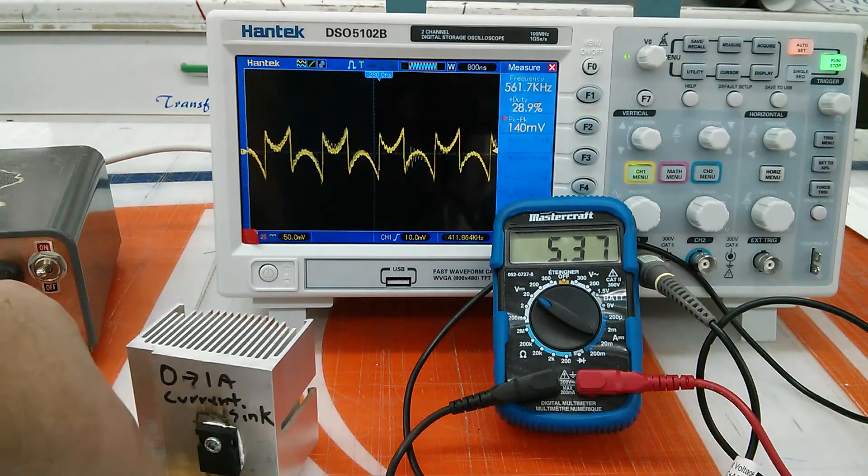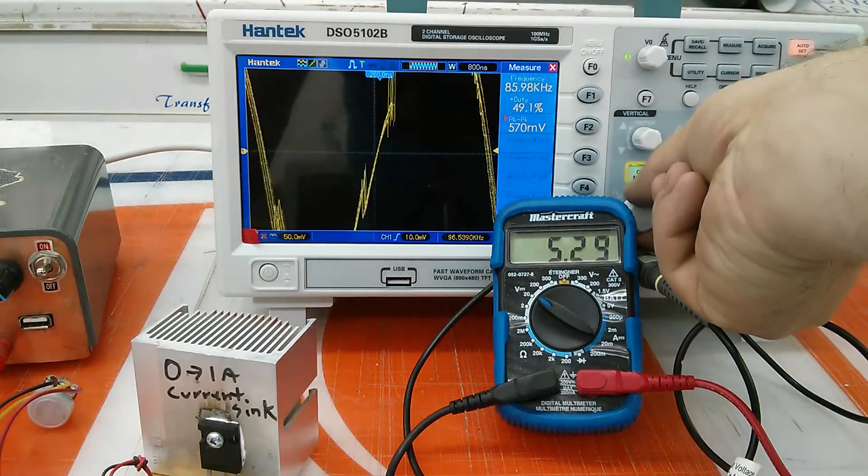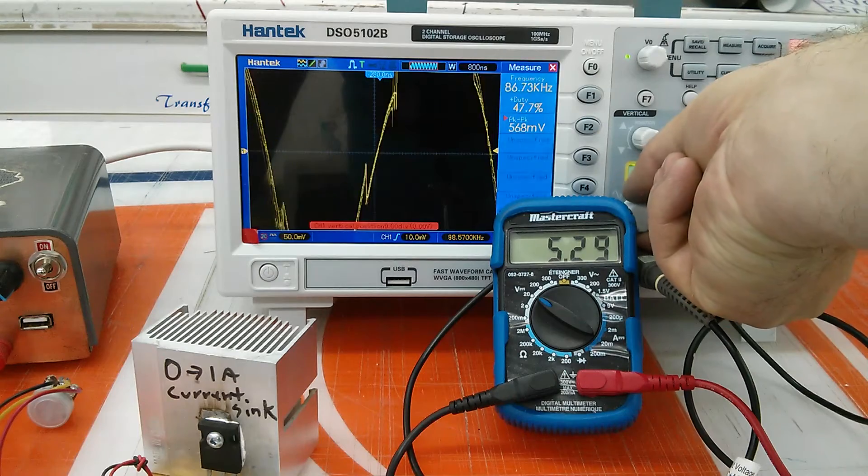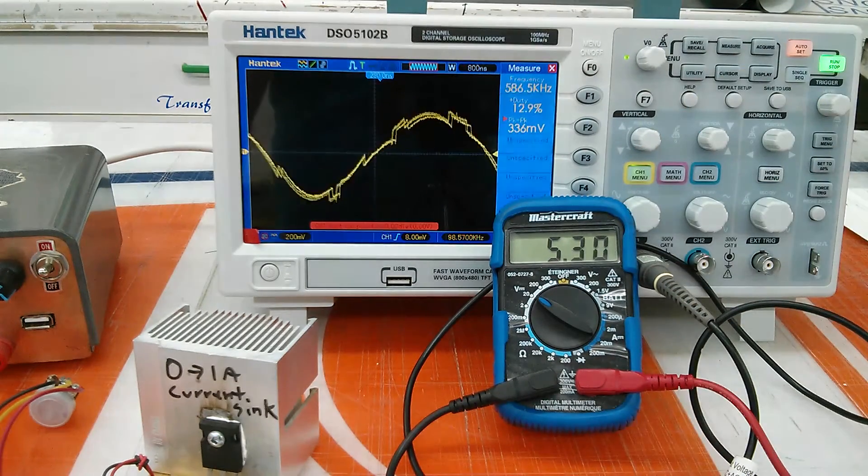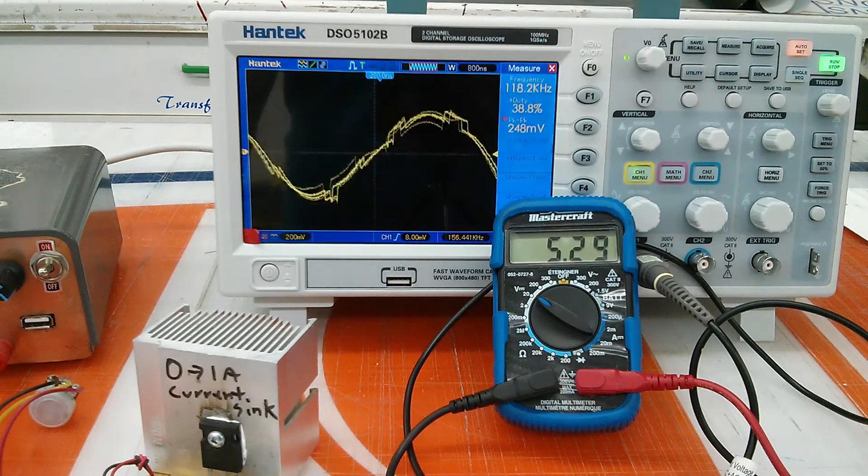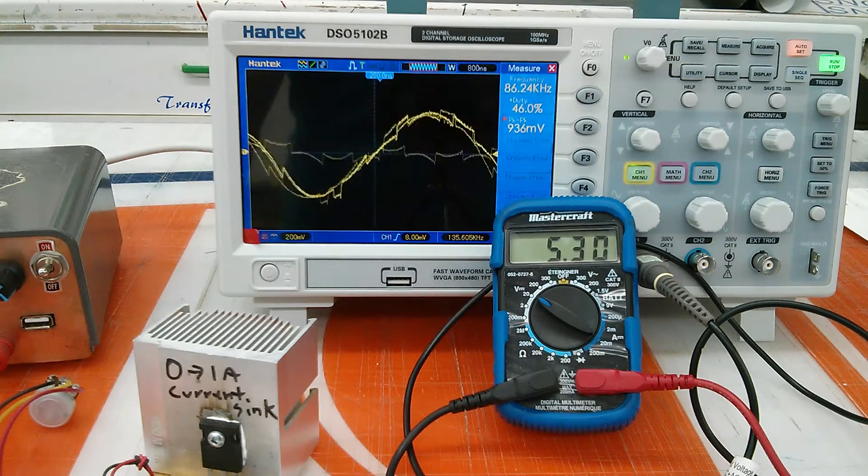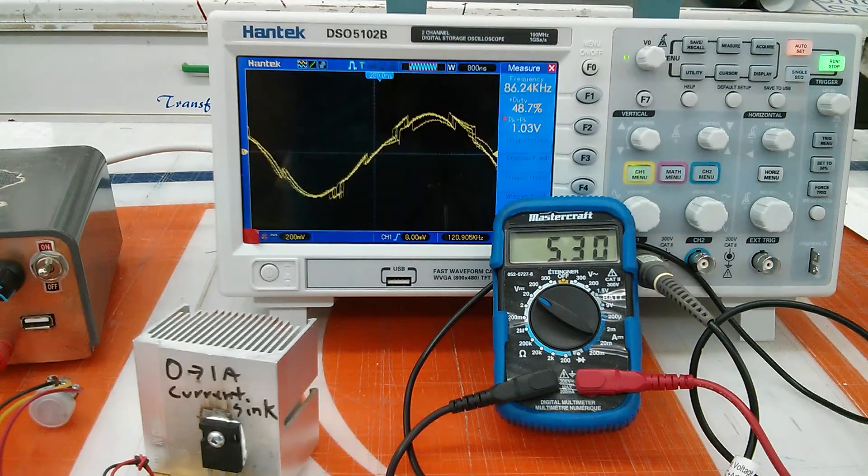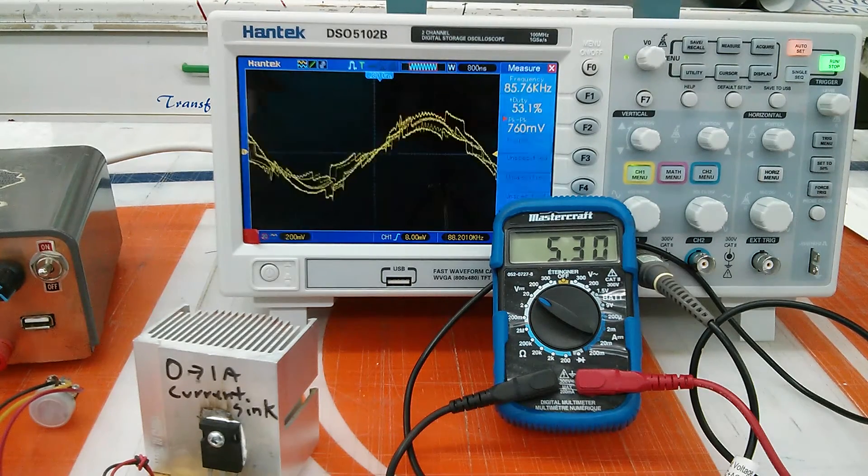I'm going to turn on the current sink here, I'll just have to adjust that. As you can see now it's huge fluctuations there and variations. I have the current sink preset before I started recording to 1 amp approximately.